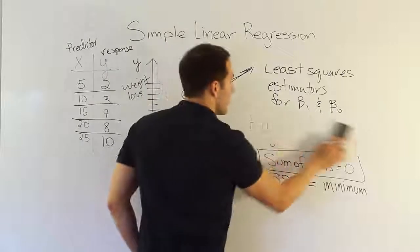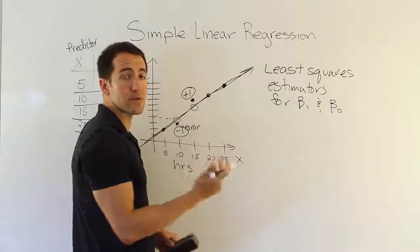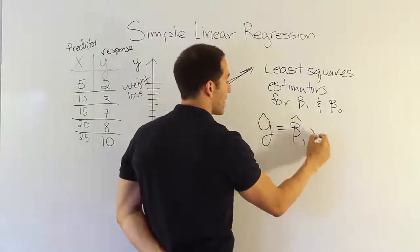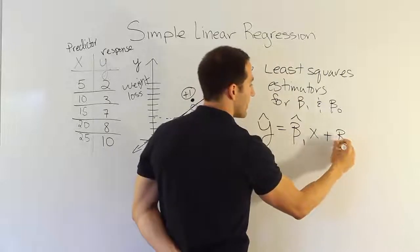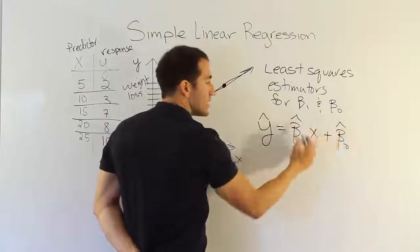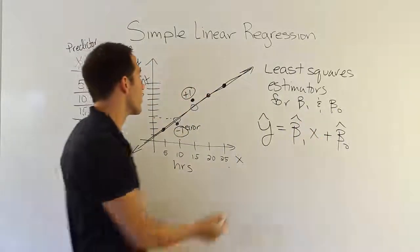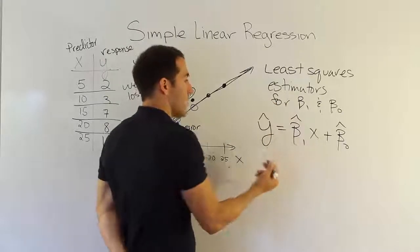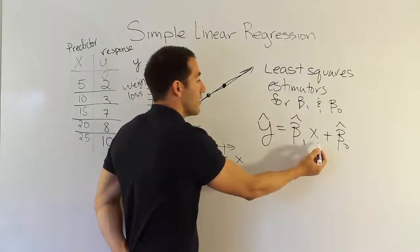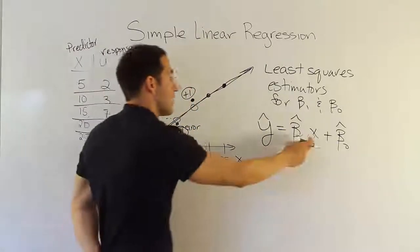And when you get those estimators, of course, we're going to have to show that they're estimators by putting a little hat in the notation. So our model will finally become y-hat is equal to beta1-hat x plus beta0-hat. The hat just means that these aren't the actual population values, but they were estimated from sample data. The y-hat is just the result of that. But remember the interpretation of this y, for a given x-value, it's going to tell you what the average weight loss is going to be typically for people who have that x-value.